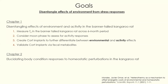My second chapter was on elucidating body condition responses to homeostatic perturbations — specifically the increased corticosterone implants given to the kangaroo rats. It's not yet published, but hopefully with more long-term data combined with these implants we can get a paper out of it. For this chapter, I measured fat, percent fat, lean mass, and total body water over a three-month period in the kangaroo rat.